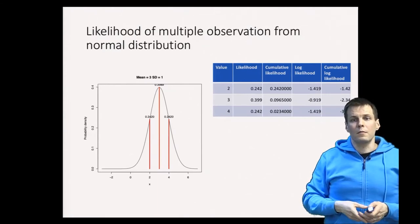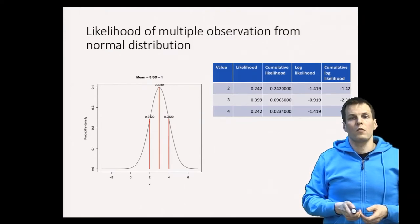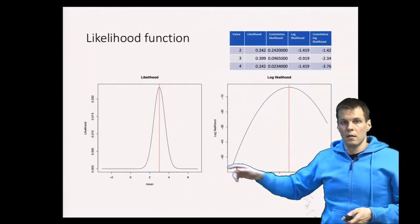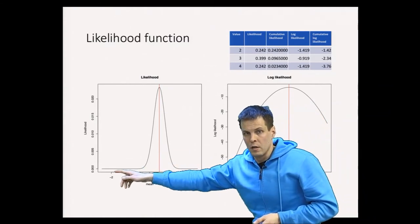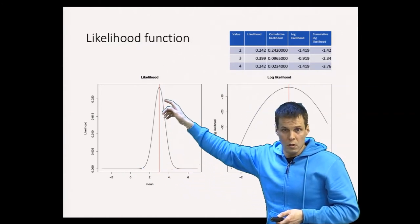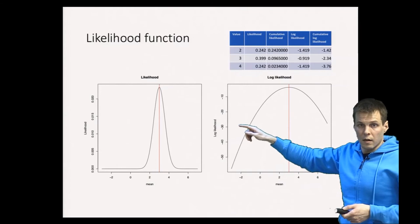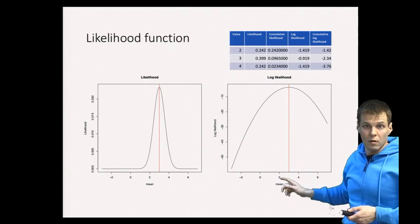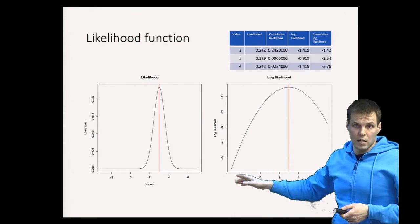The maximum likelihood estimate is found by maximizing the likelihood function or the log likelihood function. We can express the likelihood as a function of the mean. The likelihood of getting those three observations is pretty much zero far from the correct value and peaks only when we are close to the correct value. The log likelihood looks like a much nicer curve because it goes in a clear direction even when we are further from the actual correct population value. That is one reason why we use logarithms for maximum likelihood estimation.